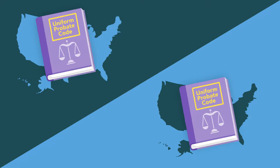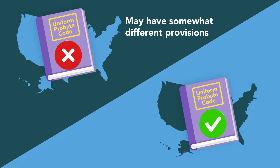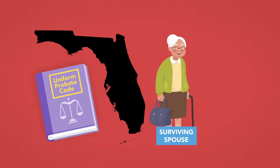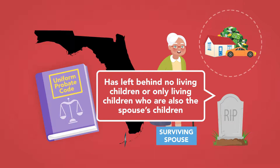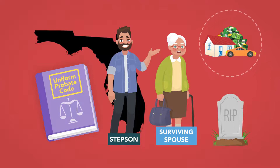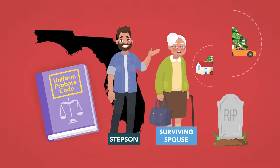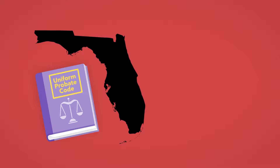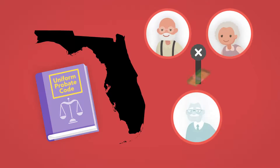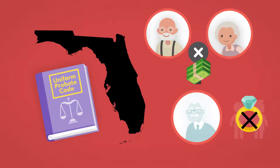States that have not enacted the Uniform Probate Code, and states that have enacted a modified version of the code, may have somewhat different provisions and allocations. For example, under Florida law, as under the code, a surviving spouse inherits the entire estate if the deceased person has left behind no living children, or only living children who are also the spouse's children. If there are living children who are not also the spouse's children, however, the spouse is not guaranteed a minimum amount, but takes one half of the estate, while the surviving children split the other half.